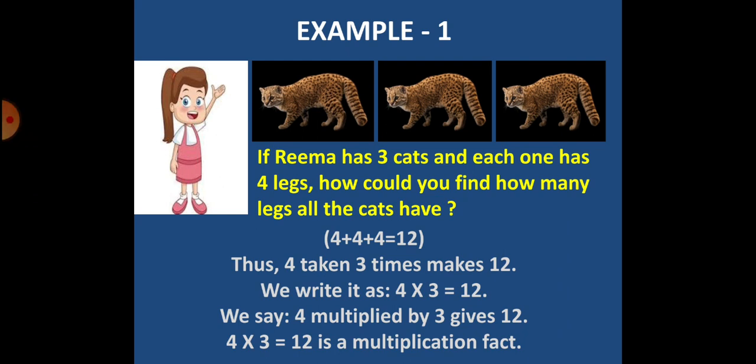Example is, if Rima has 3 cats and each one has 4 legs, how could you find how many legs all the cats have? Clearly, you can see in the picture that each cat has 4 legs, that 4 plus 4 plus 4 is equal to 12. Thus, 4 taken 3 times, that makes 12.